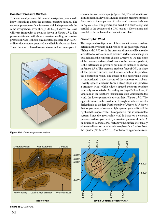Figure 15-2 shows the intersection of altitude mean sea level (MSL) and constant pressure surfaces forming isobars. A comparison of isobars and contours is shown in Figure 15-2. The geostrophic wind will blow along and parallel to the contours of a CPC just as it blows along and parallel to the isobars of a constant level chart.